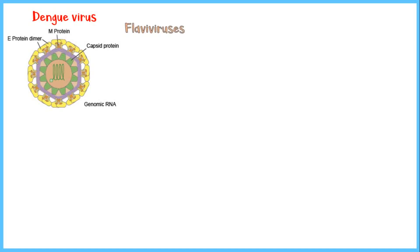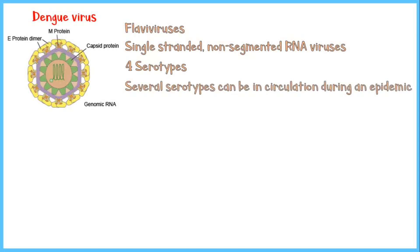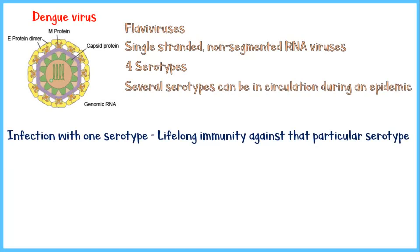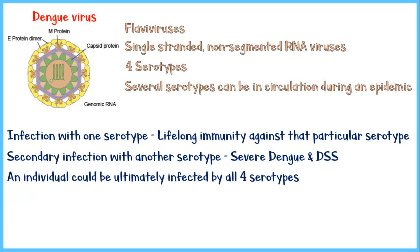Dengue virus belongs to the group of flaviviruses, which contain a single-stranded, non-segmented RNA molecule as genetic material. There are four serotypes of dengue virus, and several serotypes can be in circulation during an epidemic. Infection with one serotype gives lifelong immunity against that particular serotype. However, secondary infection with another serotype can cause severe dengue and dengue shock syndrome. Ultimately, an individual could be infected by all four serotypes.